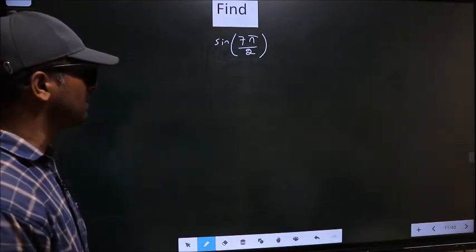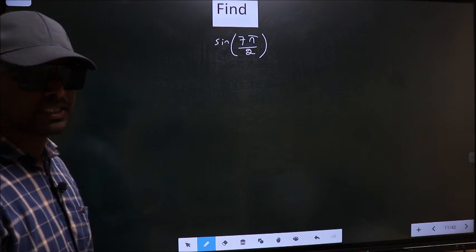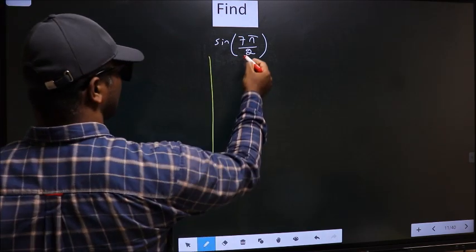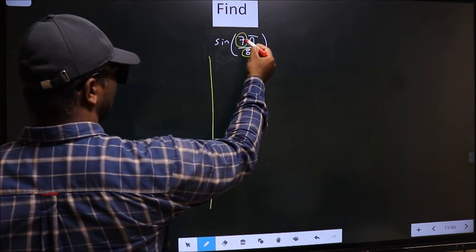And sine 7π/2. To find this, we should follow this method. In the denominator we have 2 and in the numerator we have 7.